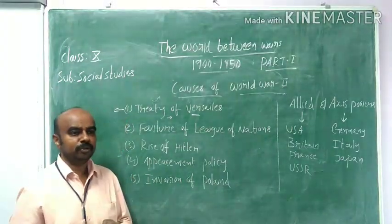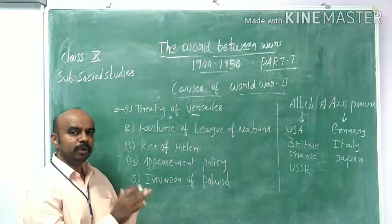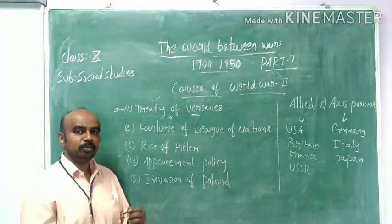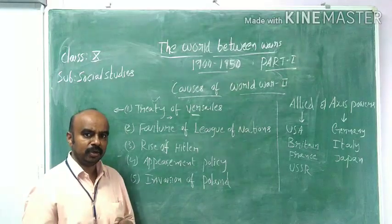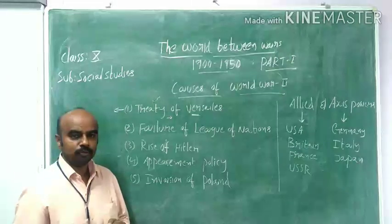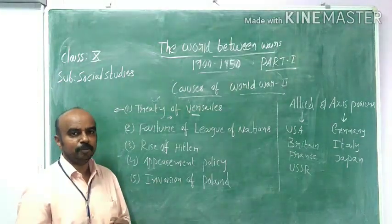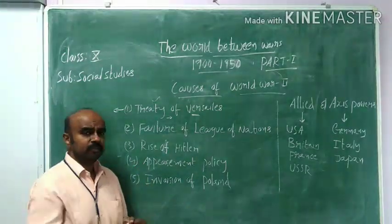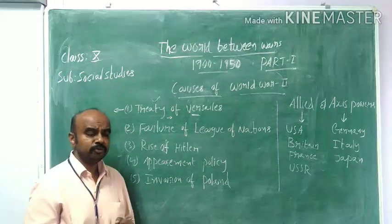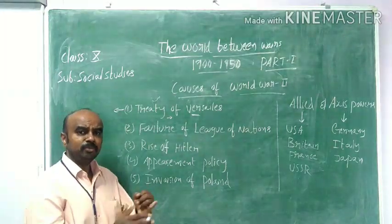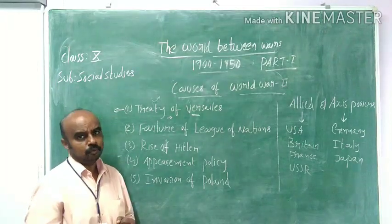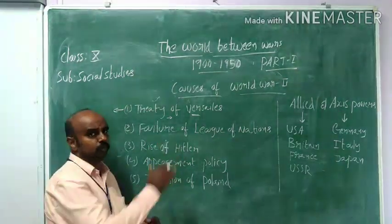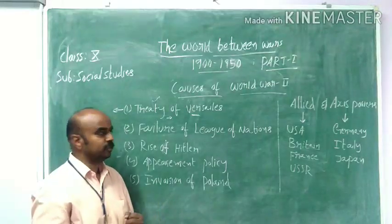The second is the military provision. Under this military provision, Germany was asked to reduce its military strength. Prior to World War I, Germany had a huge military strength in Europe — more than 10 lakh soldiers, as well as submarines, tanks, and other kinds of arms and weapons. The Treaty of Versailles forced Germany to reduce its military strength drastically — from 10 lakh to 1 lakh soldiers, meaning nearly 8 to 9 lakh soldiers lost their opportunity.